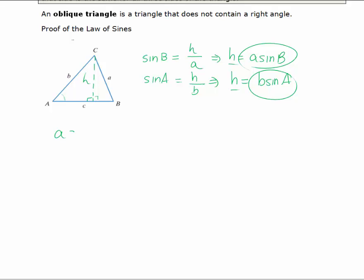I'm going to divide both sides of this equation by sine A sine B. When we cancel, we get a over sine of A equals b over the sine of B.